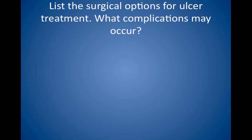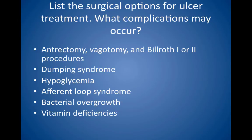List the surgical options for ulcer treatment. What complications may occur? Surgical options generally are considered only if medical treatment has failed or if complications are present, such as perforation or bleeding. Surgical procedures for peptic ulcer disease include antrectomy, vagotomy, and Billroth-1 or 2 procedures. After surgery, watch for dumping syndrome, which includes weakness, dizziness, sweating, and nausea or vomiting after eating. Patients also develop hypoglycemia 2-3 hours after a meal, as well as afferent loop syndrome, bacterial overgrowth, and vitamin deficiencies, especially vitamin B12 and/or iron, causing anemia.